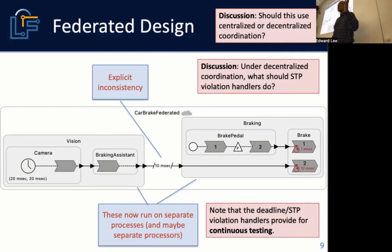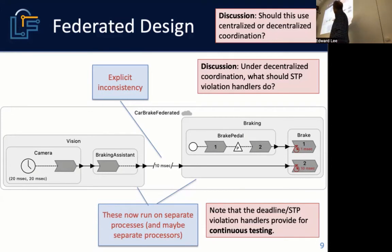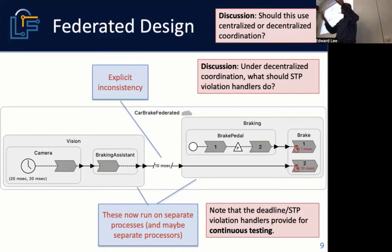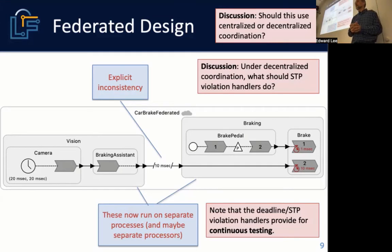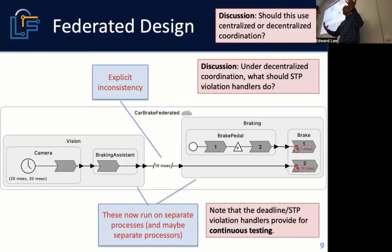For network testing, when you do federated execution you can put all the federates into Docker containers, then invoke those containers with a simulated network and introduce perturbations — congestion, latencies, packet drops. There's a term for that kind of testing: it's called chaos engineering. You simulate the variety of network degradations you expect to encounter in the field.